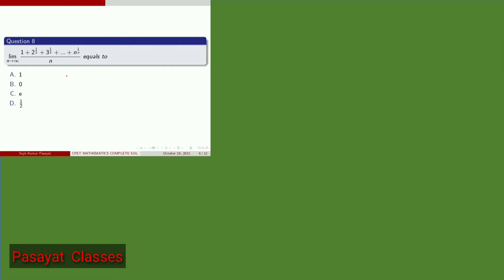Here we apply Cauchy's First Theorem on Limits. The theorem states: if a_n is a sequence and the limit as n tends to infinity of a_n equals L, then the limit as n tends to infinity of (a_1 + a_2 + ... + a_n) / n also equals L. This is Cauchy's First Theorem on Limits.